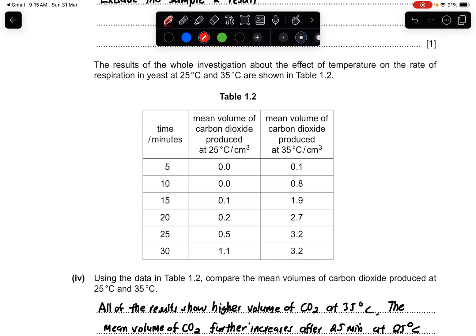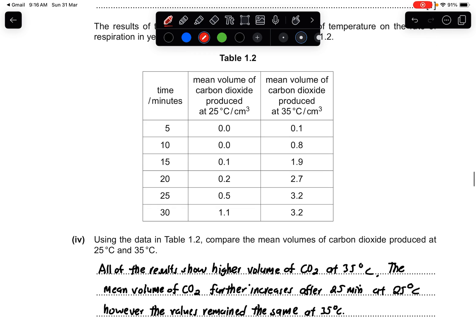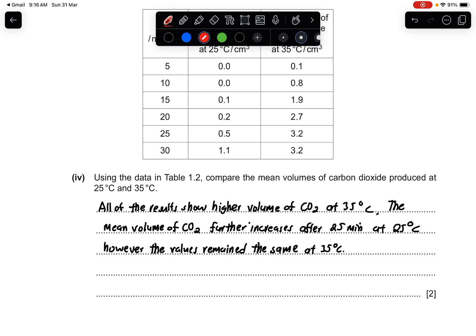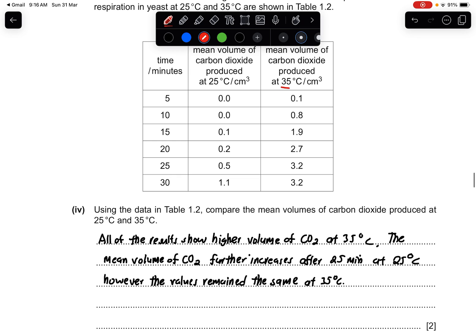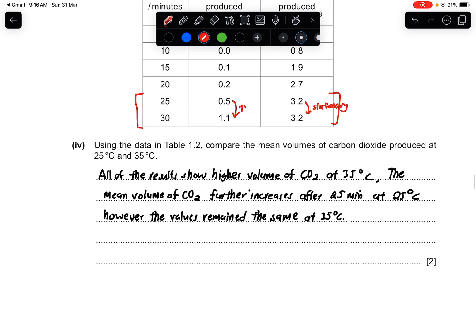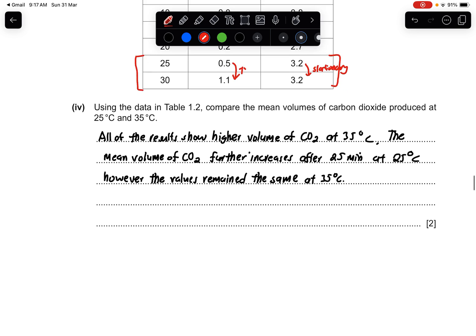The result of the whole investigation about the effect of temperature on the rate of respiration in yeast at 25 degrees and 35 degrees are shown in table 1.2. Part 4 says using the data in table 1.2, compare the mean volumes of carbon dioxide produced at 25 degrees and 35 degrees. This one is a bit like a describe question also where you can state your results. But in general, you can see that the results in the 35 degree temperature has a higher mean volume comparison with this. This is the first point. The second point is that when we look at the last few minutes here, you can see that this drastically increases. However, in here, it remains stationary. So this is how you state your two points. I've written it this way. You can have a look. Similarly, you can write something like this also.